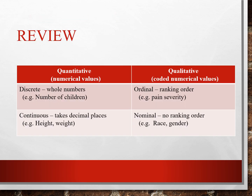For review: we have our discrete and continuous quantitative variables. Discrete would include whole numbers and continuous would include decimal places. Qualitative values, on the other hand, are ordinal, using ranking, and nominal, with no ranking order, but have specific delineations such as race and gender.